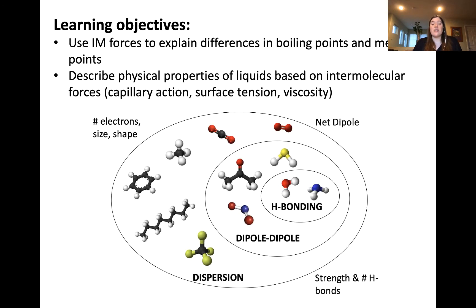As discussed in the intermolecular forces video, the three different types of intermolecular forces between molecules are dispersion, dipole-dipole, and hydrogen bonding, which is a special type of dipole-dipole interaction. If you haven't watched that video yet, now is a good time to go back and watch it before continuing. What's listed on the outside are the characteristics of each type of intermolecular force that influences their strength. For dispersion forces, that has to do with the number of electrons, size, and shape of molecules.